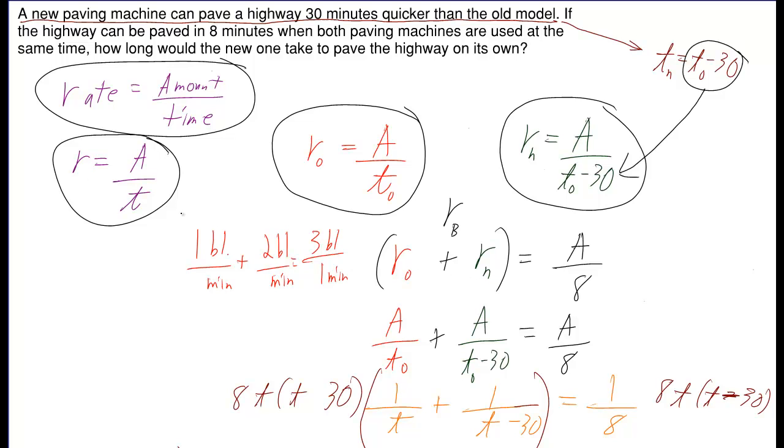So that's what you plug in for the R in this case. We'll just keep the A the same. We don't know how much work there is in any of these ones actually. So I've kept A this entire time. But then they told me that when they're working together, it can be done in eight minutes. So I plugged in eight right here for T. So again, I just plugged into R is equal to A over T, where R in this case was RO plus RN. And A was just A. That's the amount of work. We don't know how much it is, because it's actually not going to matter. And T was eight.